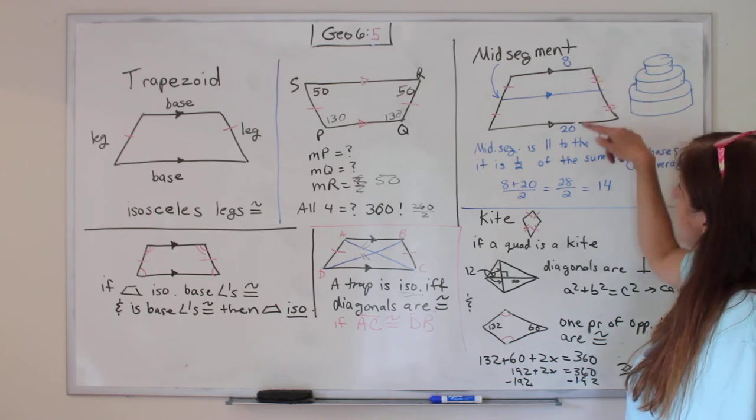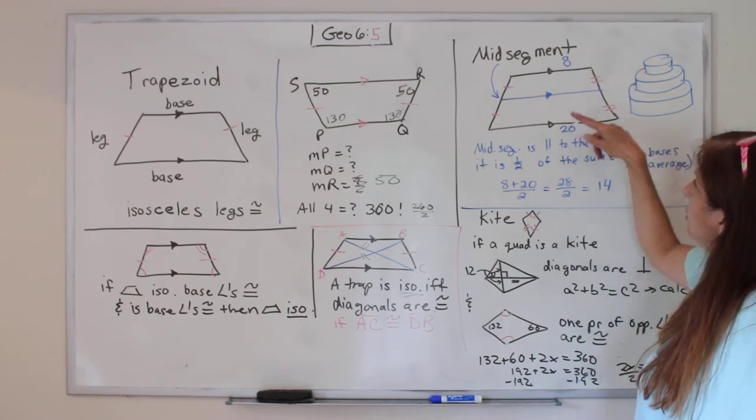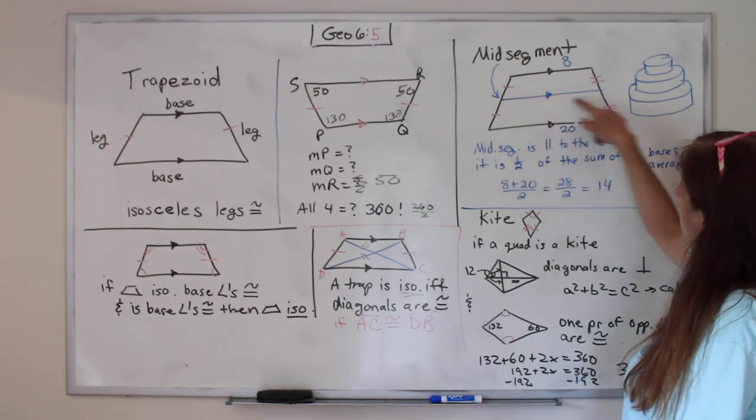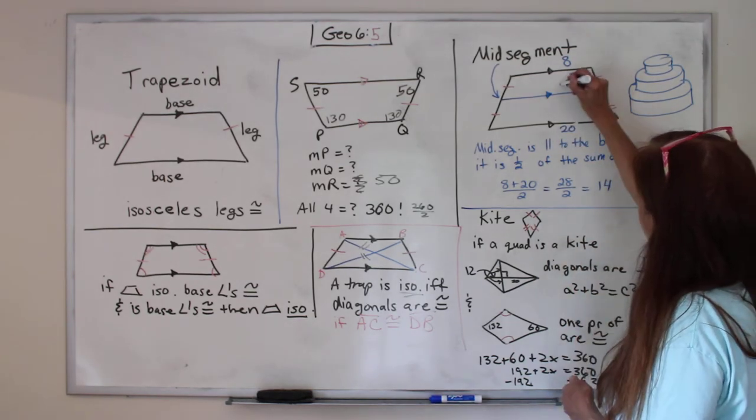So it's half of the sum of the bases. It's an average. So if this one's eight and that one's 20, you would add them together and get 28 divided by two. So our mid-segment would be 14.